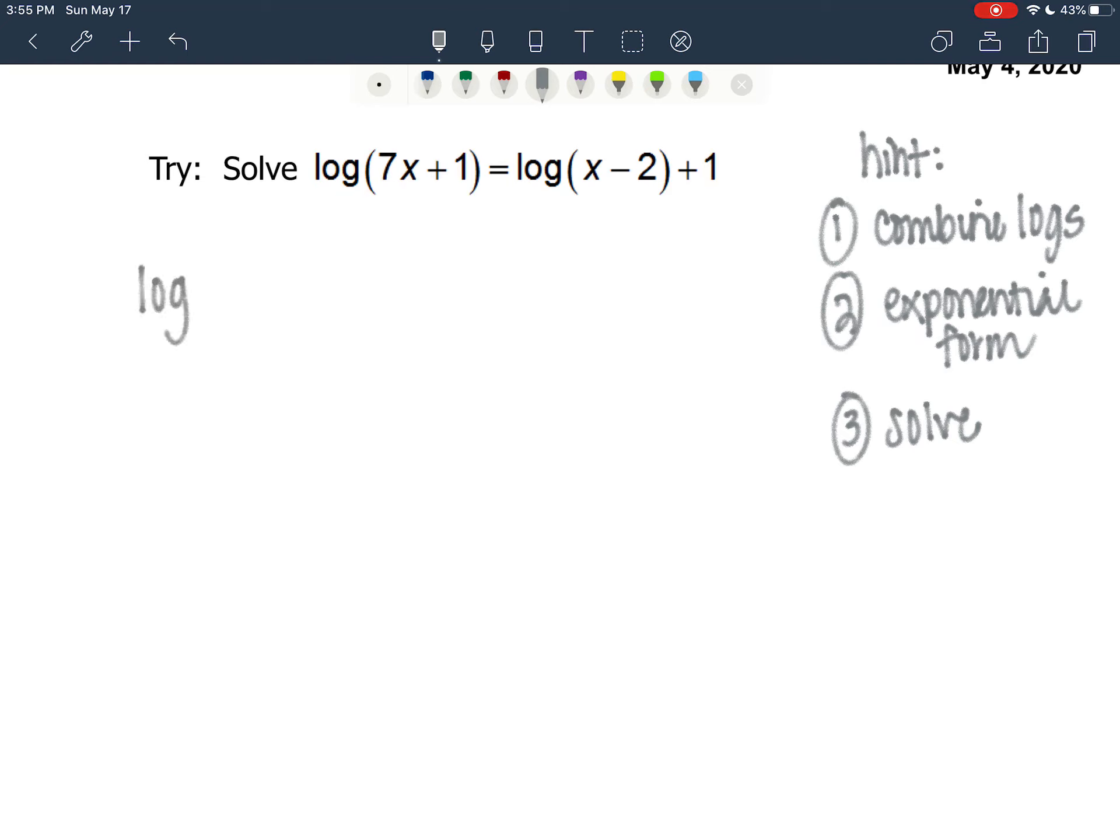So here we go. We're going to have log of 7x plus 1 minus log of x minus 2, subtracting this logarithm from both sides, equals 1. We're going to condense log. I'm going to have a fraction. 7x plus 1 goes in the numerator, x minus 2 goes in the denominator equals 1.